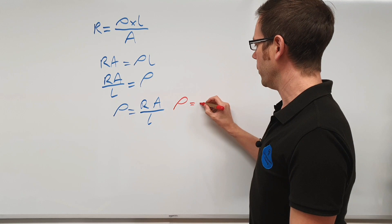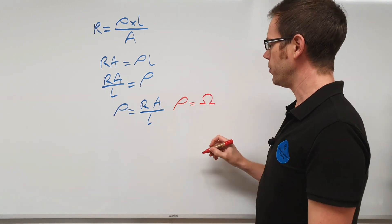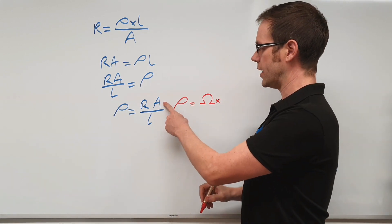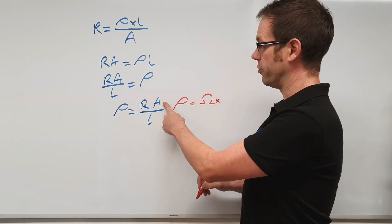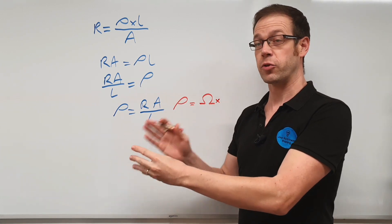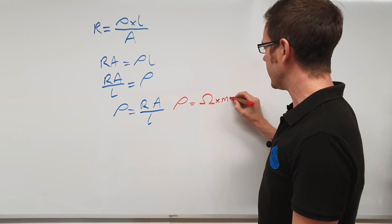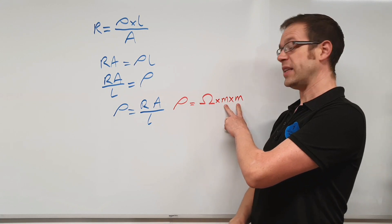So we replace the R with its unit symbol, which is resistance, which is the omega symbol. So we've got ohms, and then we're going to times that by cross-sectional area. Now bear in mind that the cross-sectional area of a square piece of cross-section would be the length in meters times by the length in meters. So that's actually meters times meters,